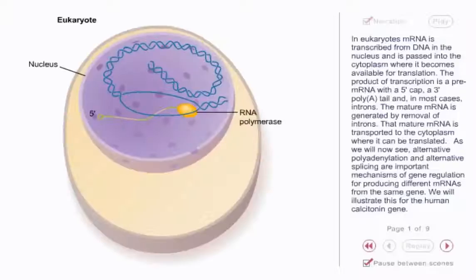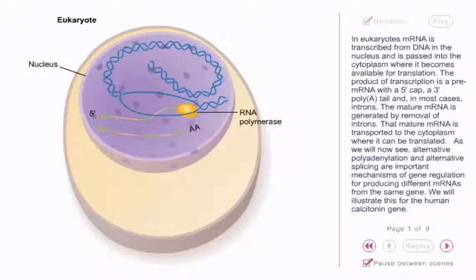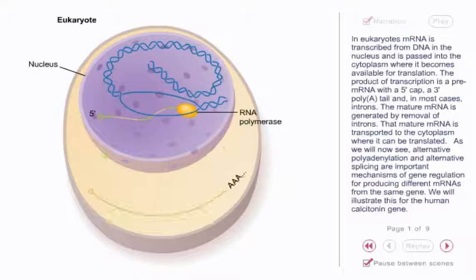In eukaryotes, mRNA is transcribed from DNA in the nucleus. The product of transcription is a pre-mRNA with a 5' cap, a 3' poly-A tail, and in most cases, introns. The mature mRNA is generated by removal of introns. That mature mRNA is transported to the cytoplasm where it can be translated.